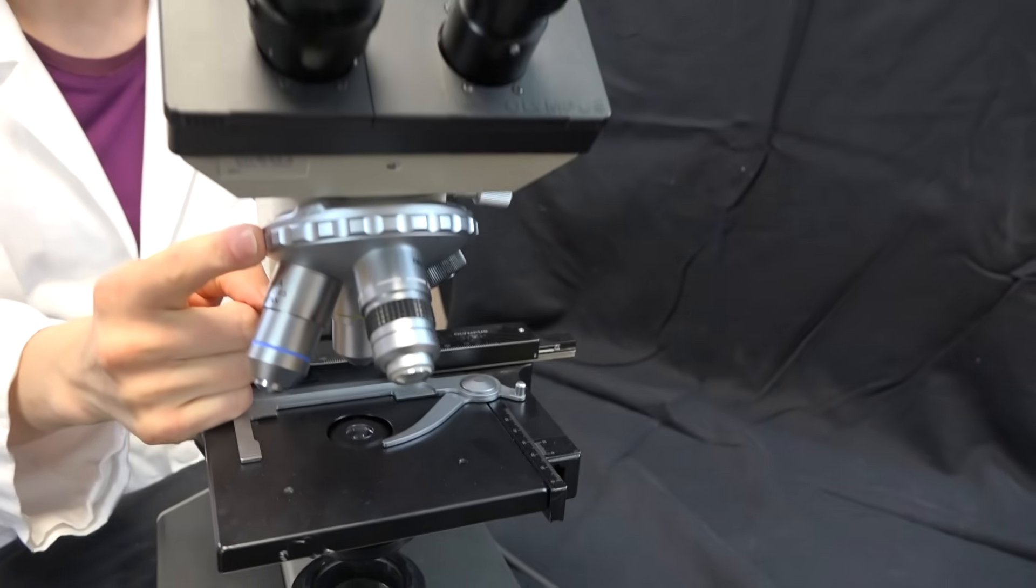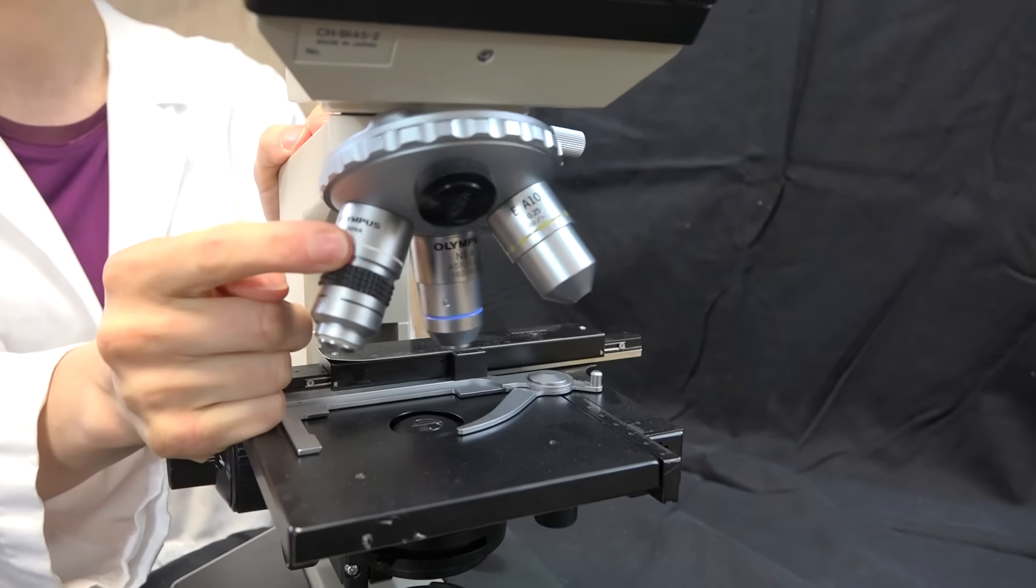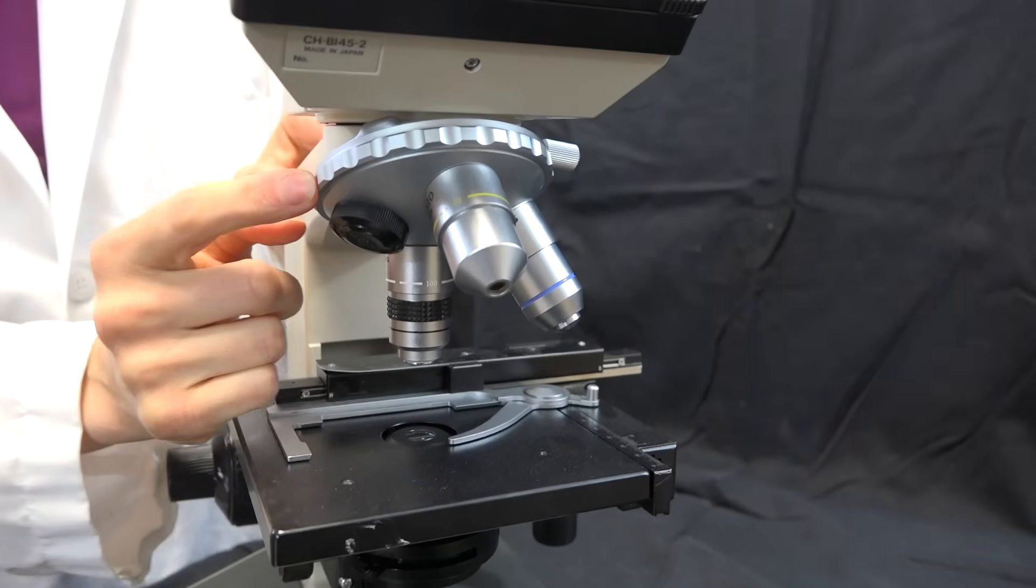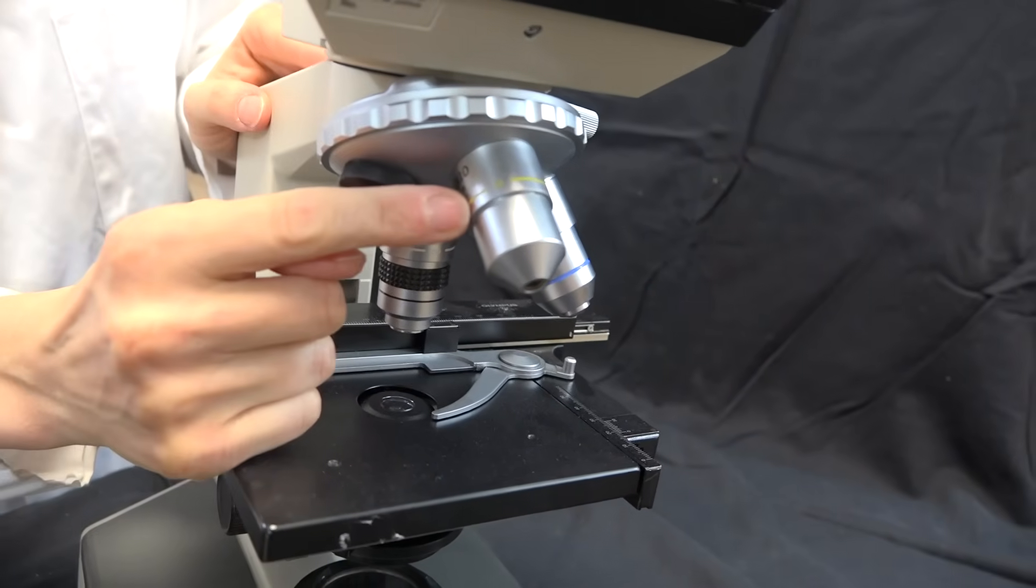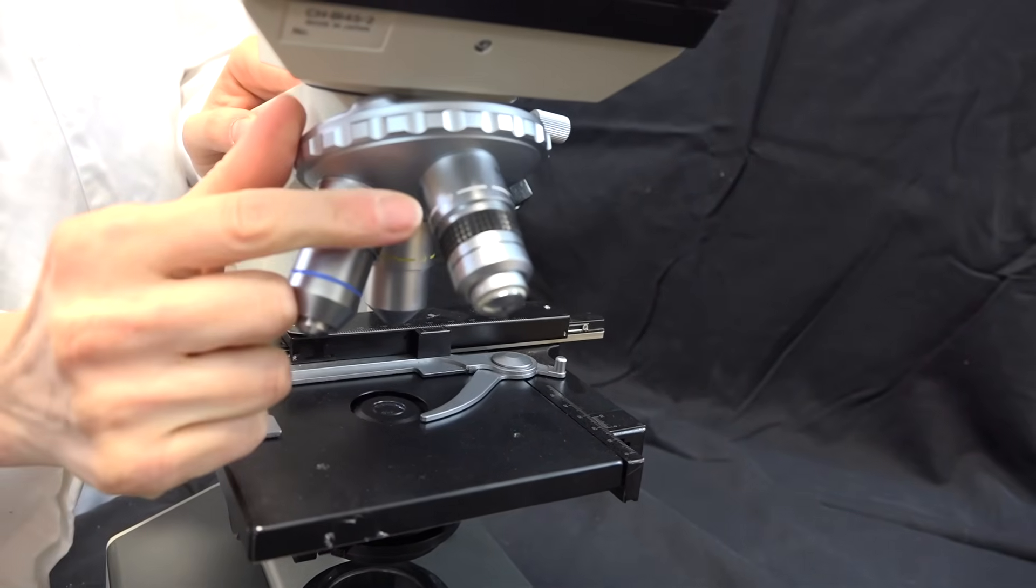Down here is the revolving nose piece. Each of the lenses you see on the revolving nose piece has a different magnification. This microscope is outfitted with three objectives: a 10x, a 40x, and a 100x.